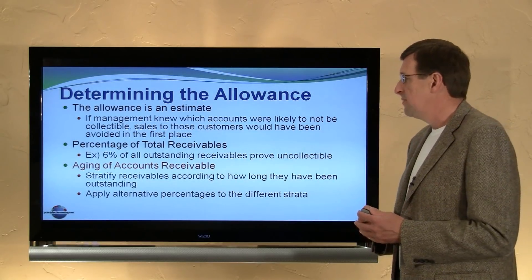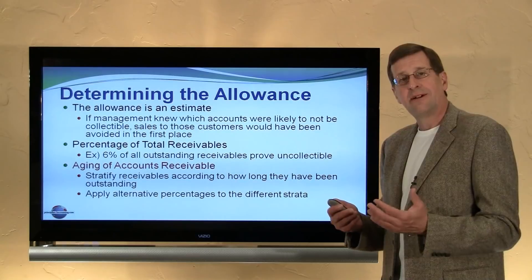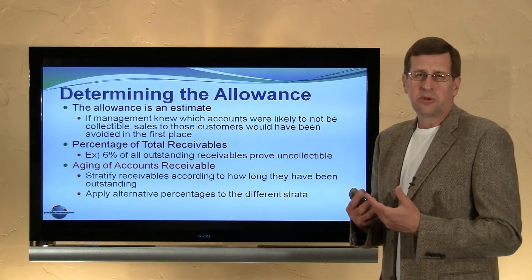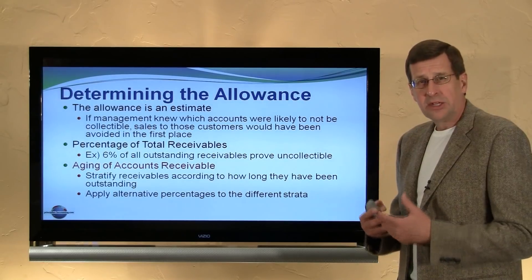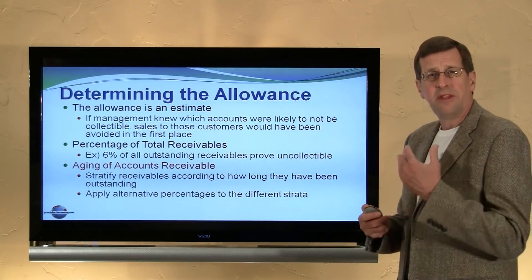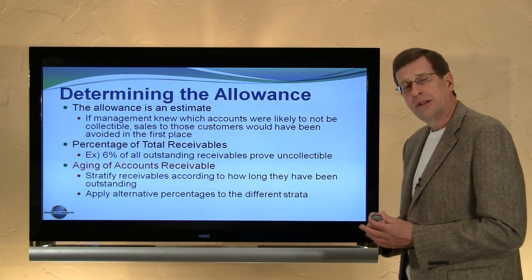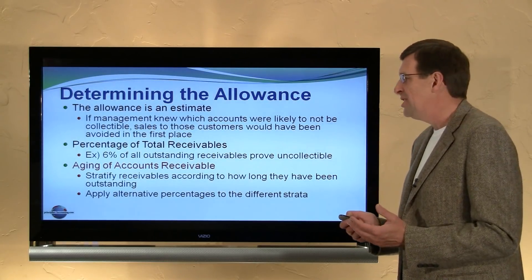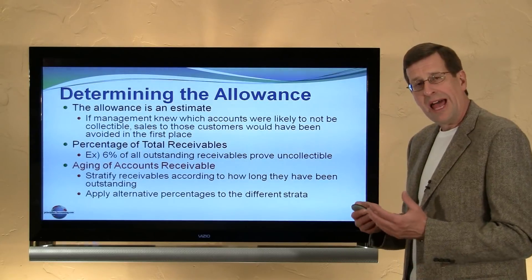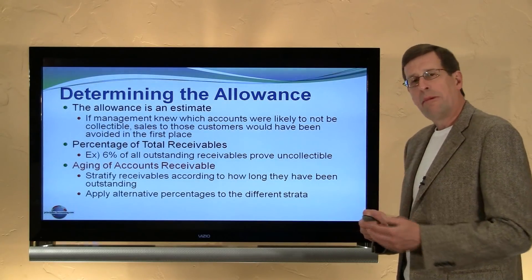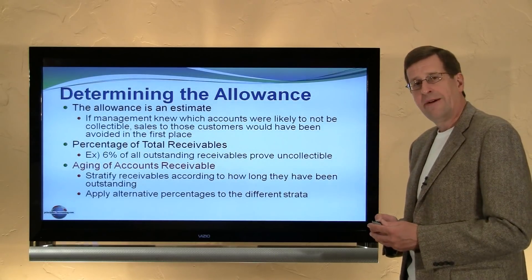This might be done as a percentage of total receivables, such as 6% of all outstanding receivables. These percentages would not be the same for all companies — they would be based on the historical experience of the company, their best judgment, their best estimate about what rates are appropriate. We might also look at the accounts receivable and do an aging, where we stratify the accounts receivable by how long they've been outstanding, and we apply different percentages to each strata to determine the appropriate balance for the allowance account.